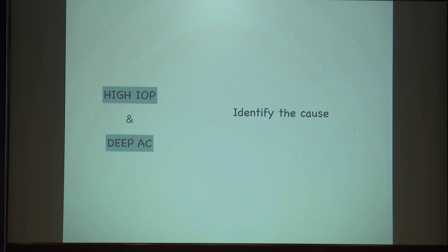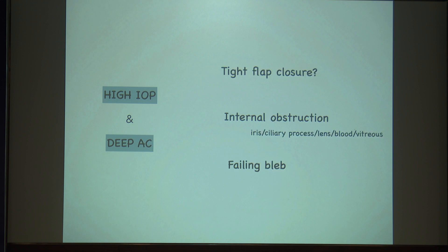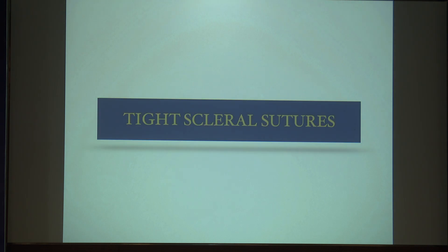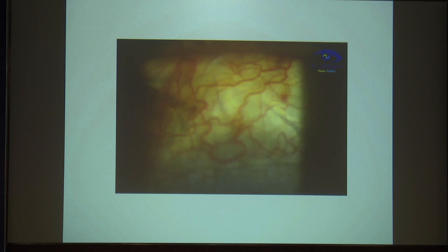Coming to high IOP and deep AC: here you have to identify the cause — it is not draining. It can be either a tight flap closure, internal obstruction, or a failing bleb. The most common thing we encounter is tight scleral sutures — you are tying it too tightly and the bleb will be flat.